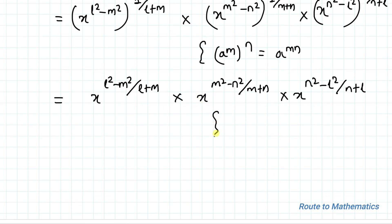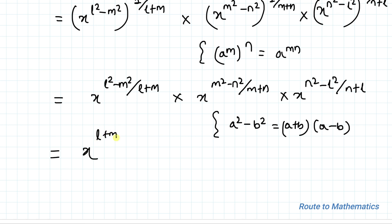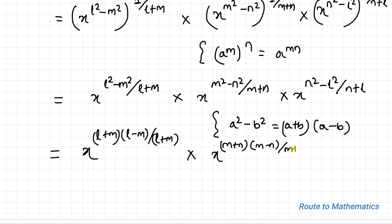In the next step we apply the algebraic identity that a squared minus b squared equals (a+b) multiplied with (a minus b). Applying this identity we can write x to the power (l+m)(l−m) divided by (l+m), multiplied with x to the power (m+n)(m−n) divided by (m+n), multiplied with x to the power (n+l)(n−l) divided by (n+l).